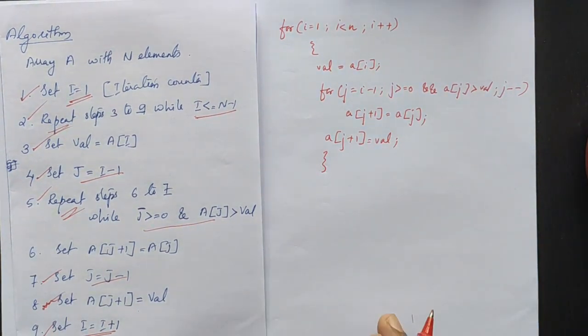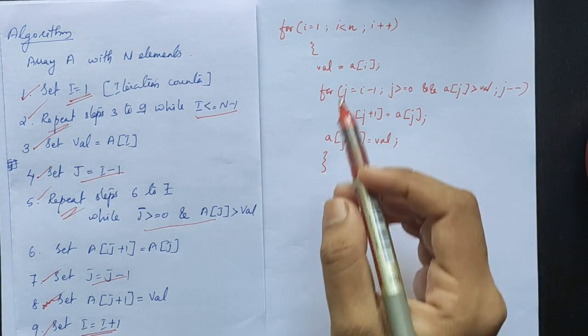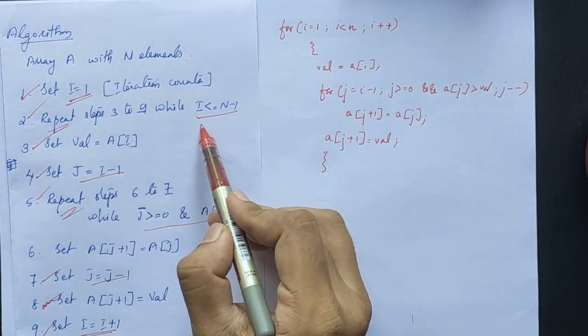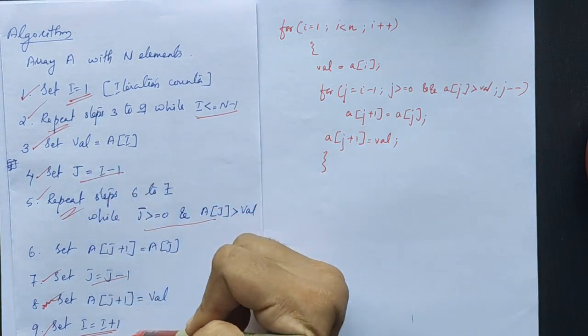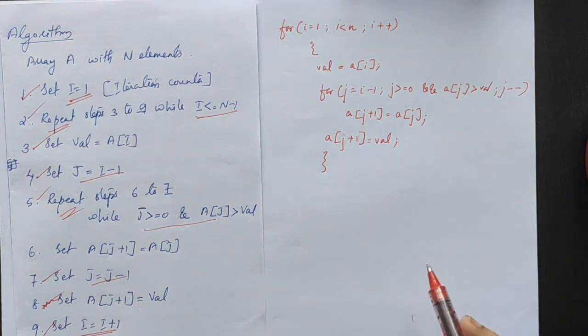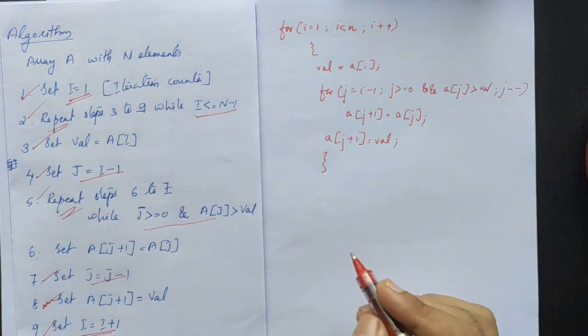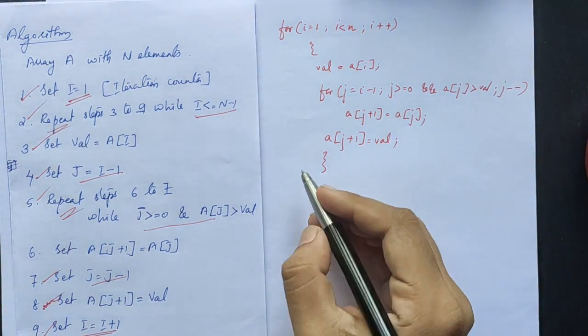These statements complete the insertion sort. The i loop repeats with i increment, and the statements execute.